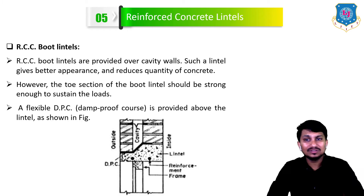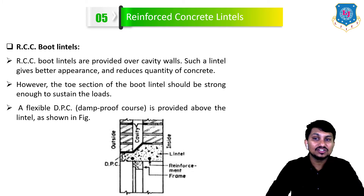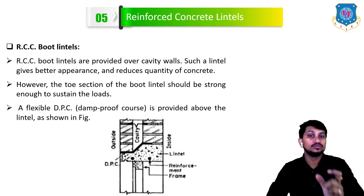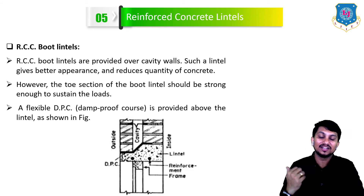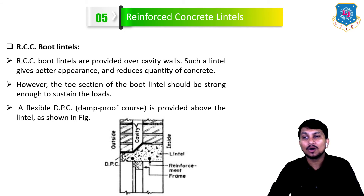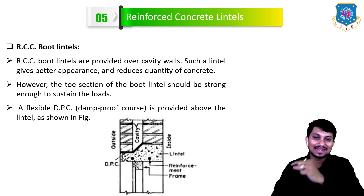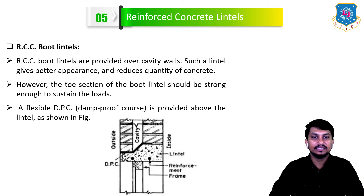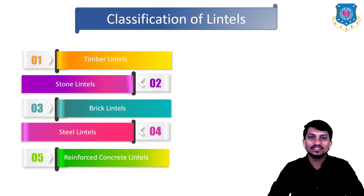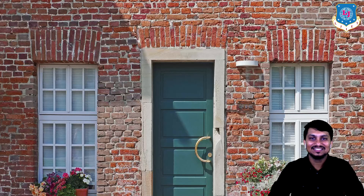RCC boot lintels are provided over cavity walls. Such a lintel gives a better appearance and reduces the quantity of concrete. The toe section of boot lintels should be strong enough to sustain the loads. A flexible DPC (damp-proof course) layer is provided above the lintel, clearly visible as a black line in the figure. That is all about the classification of lintels.